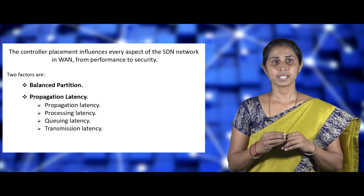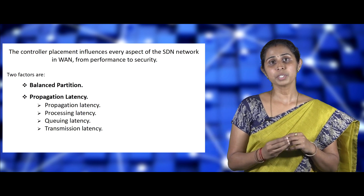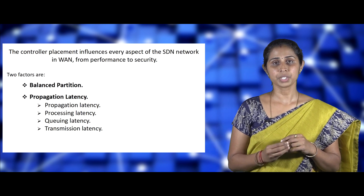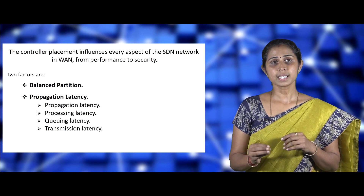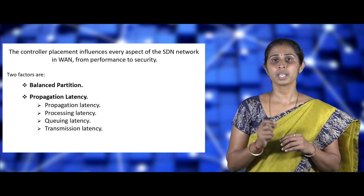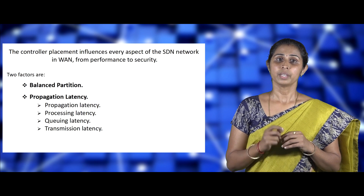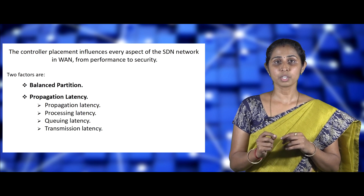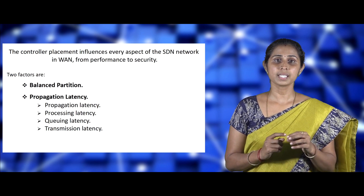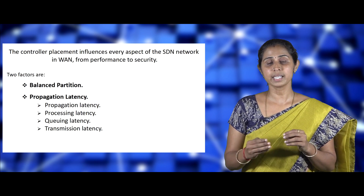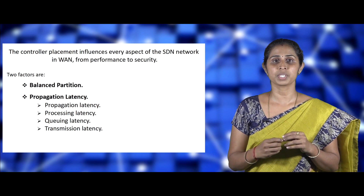Regarding propagation latency: after considering the reliability of partitioning, network latency is certainly a significant design metric in long propagation delay WAN. Network latency includes four parts: propagation latency, processing latency, queuing latency, and transmission latency.